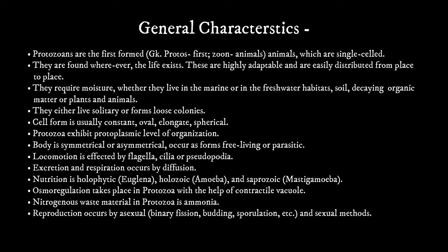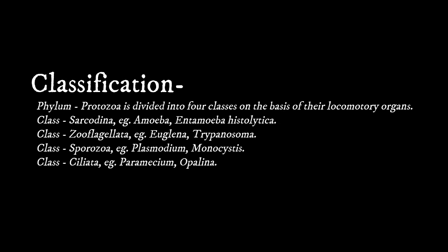Reproduction in protozoa occurs by both asexual and sexual methods. Moving on to the classification of Phylum Protozoa: it is divided into 4 classes on the basis of locomotory organs. Class 1 is Sarcodina, example: Amoeba histolytica. Class 2 is Zooflagellata, examples: Euglena and Trypanosoma. Class 3 is Sporozoa, examples: Plasmodium and Monocystis. Class 4 is Ciliata, examples: Paramecium and Opalina.